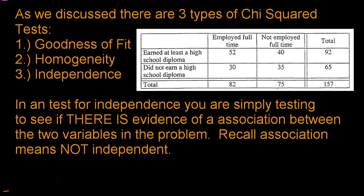We've already learned about a chi-square test for goodness of fit. Now we're going to learn about a chi-square test for independence. As we discussed, there are only three types of chi-square tests: goodness of fit — that's when there's only one variable — homogeneity, and independence. This video is going to focus on independence.